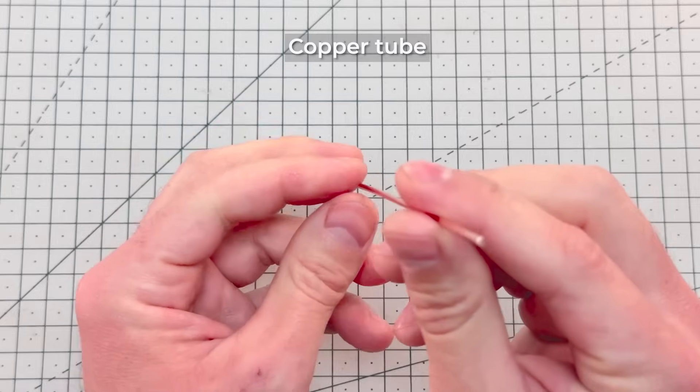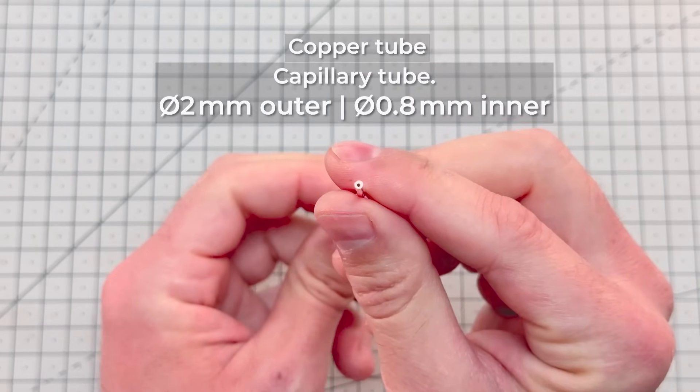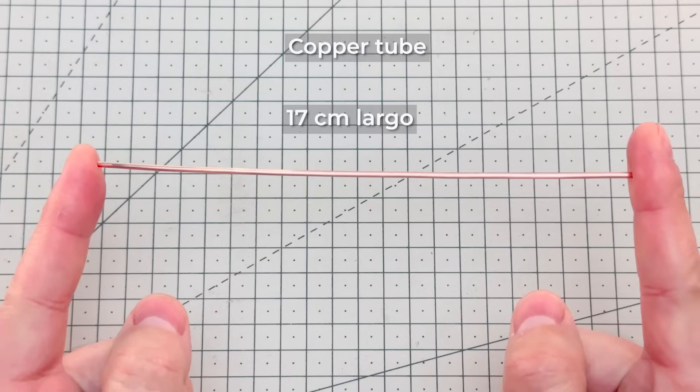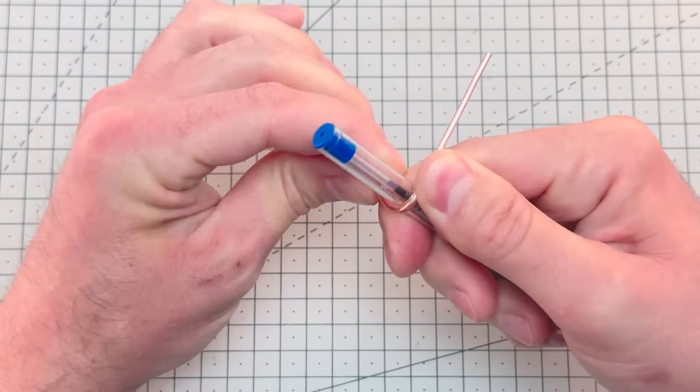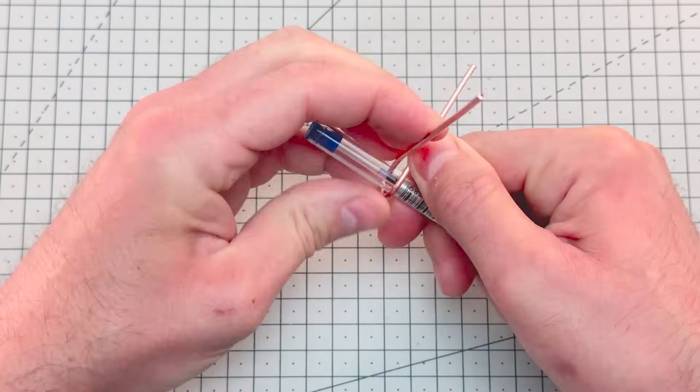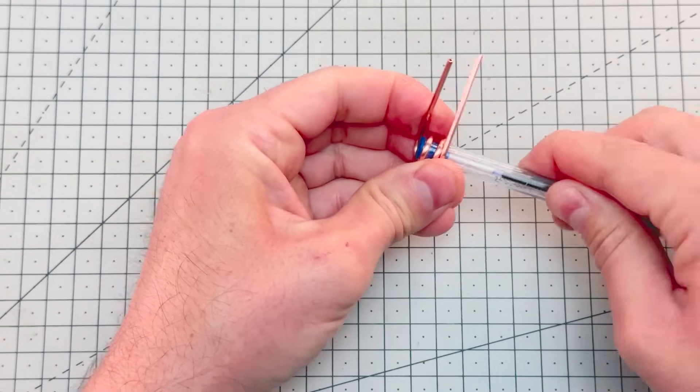Now we're going to take a copper tube called a capillary tube. This small tube will create a sudden pressure drop in the evaporator, which will produce the cooling effect. We'll bend it using a pen. Two or three turns will be enough.